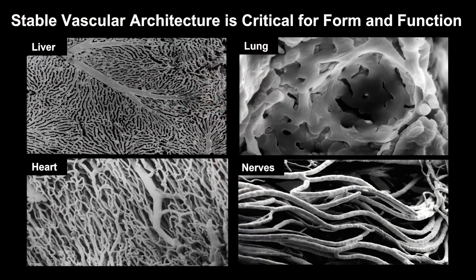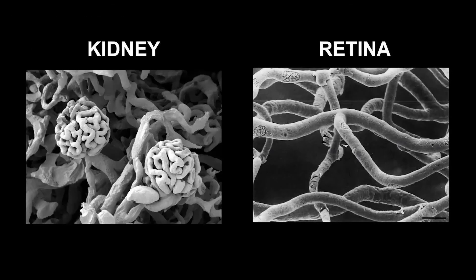Blood vessels form an extensive physiological network throughout the body, bringing oxygen and micronutrients to all our cells. A specialized morphology of vasculature adapts the form to the function in every organ. For example, in the liver, vessels form sinusoids; in the lung, they wrap around alveoli. There are also similarities in vasculature between tissues, and the angiopoietin-TI system for vessel control is conserved everywhere, because in every location, vessels should conserve a unique and highly stabilized architecture to serve their function.